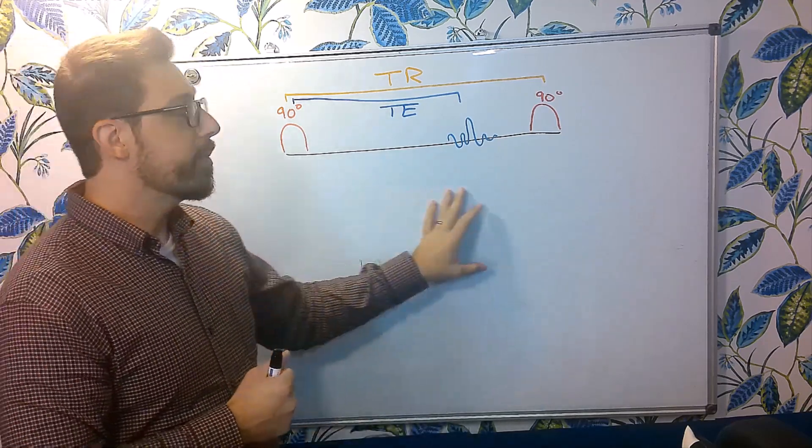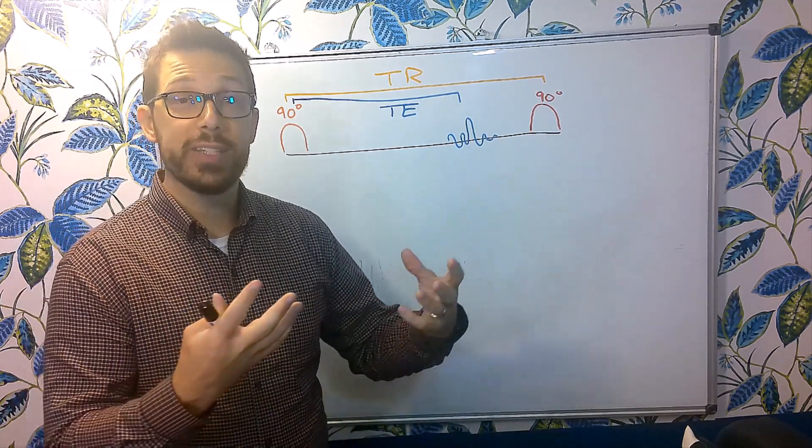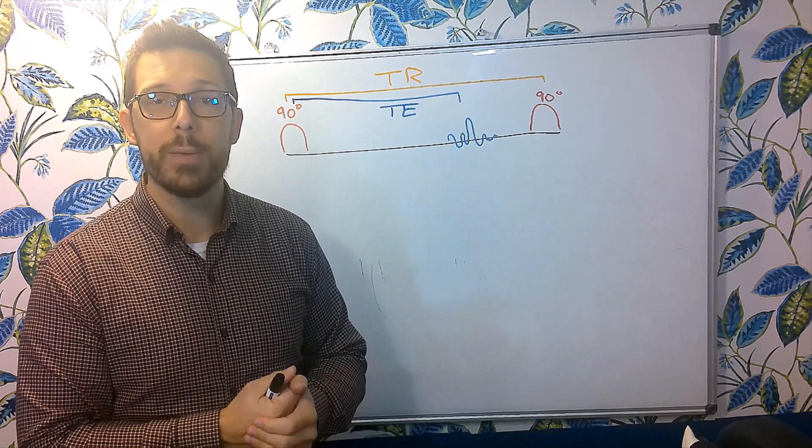So when we look at something like this, we're manipulating these two parameters to obtain either a T1 weighted image or a T2 weighted image. And we can talk about that in a little more depth later on.